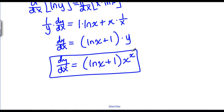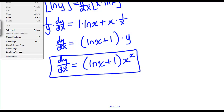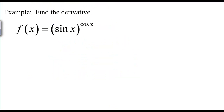Anytime you have a function raised to a function, you're going to have to use logarithmic differentiation. When you're using it just to simplify a complicated function, that's a choice — you could use the product rule, chain rule, and power rule as many times as needed. But whenever you have a function raised to a function, like sine of x to the cosine of x, logarithmic differentiation is the only way to do it.